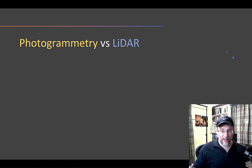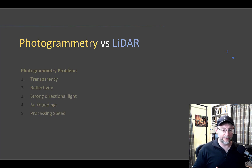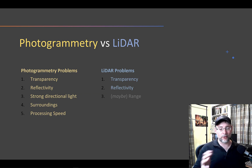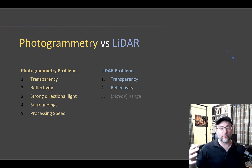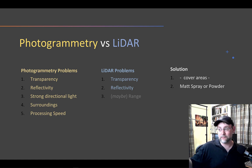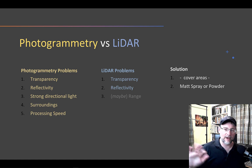Photogrammetry and LiDAR both have some problems. Photogrammetry and LiDAR have problems with transparency and reflectivity, whereas photogrammetry also has issues with strong directional lights. If the surroundings are too simple, or you take a bunch of images and get a ton of high-res photos, the upload speed and processing speed can take a long time, whereas LiDAR has much fewer problems. There are some solutions for dealing with the transparency and reflectivity issue — sometimes you can tape over areas like mirrors with non-reflective paper, or use matte sprays or powders to reduce specularity on semi-shiny objects.